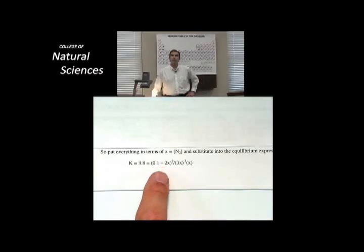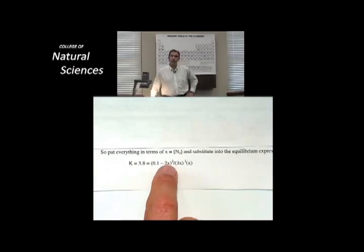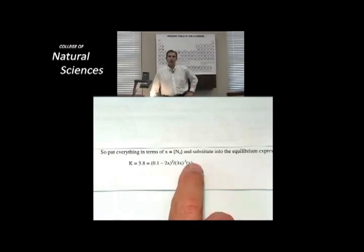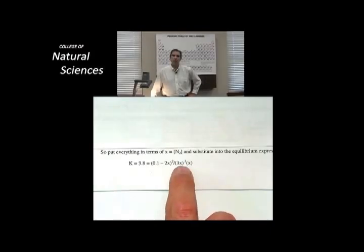The stuff on the right is my ammonia, which I know at equilibrium is 0.1 minus 2x squared. And the stuff on the left is my hydrogen, which is 3x cubed, and my nitrogen, which is just x.